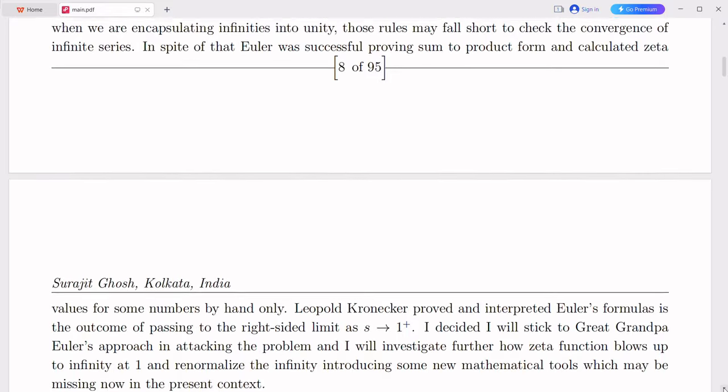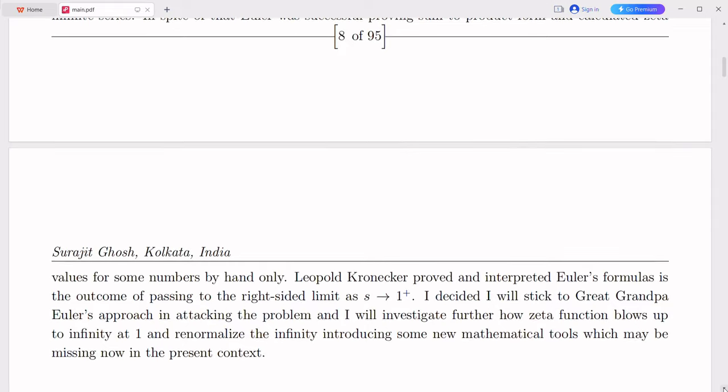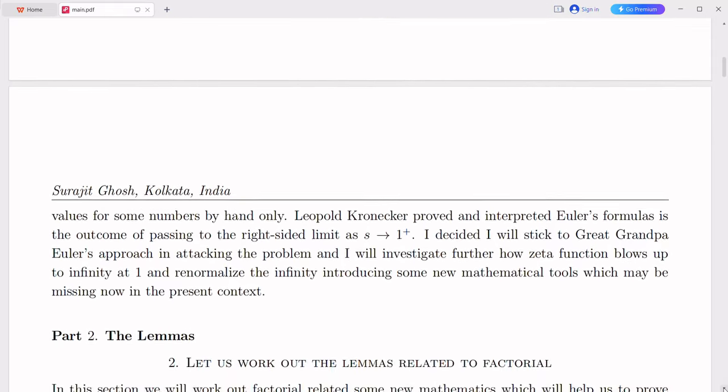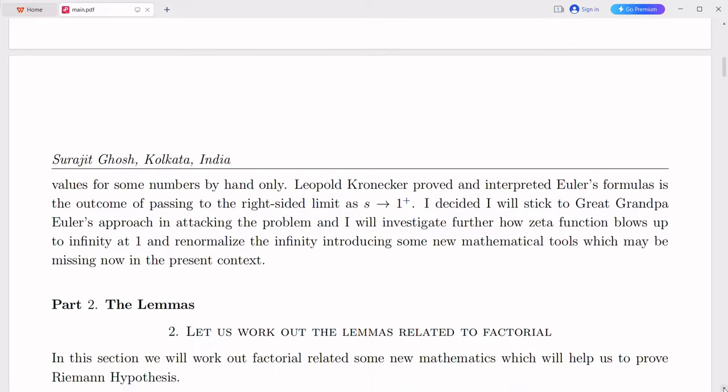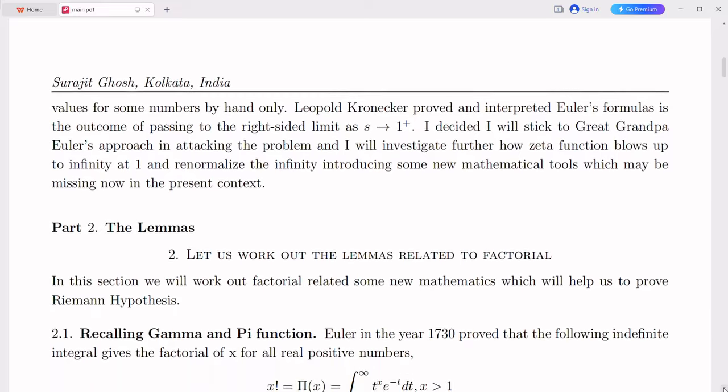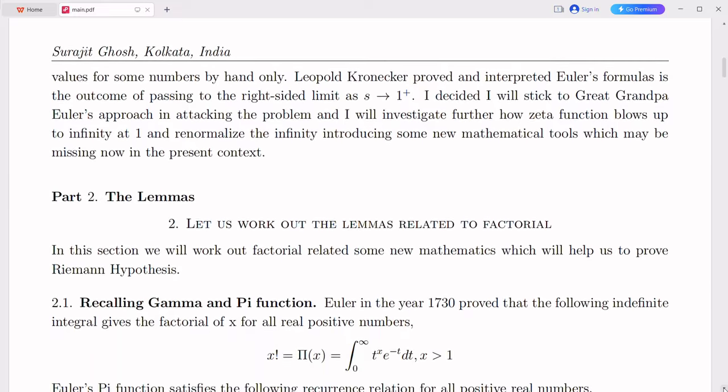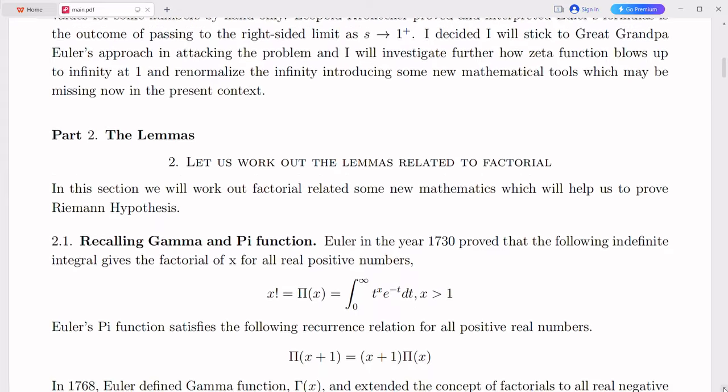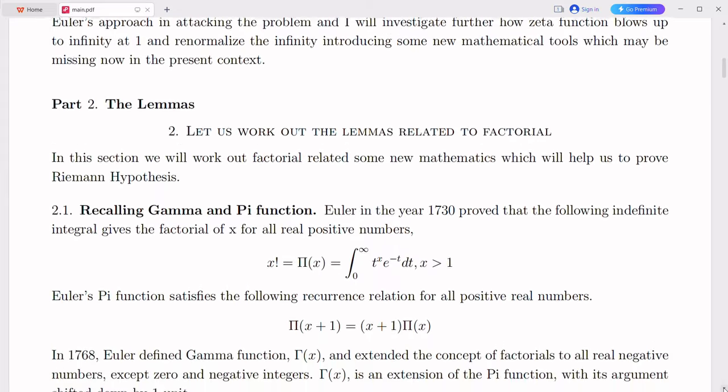I began by reading Wikipedia articles on physics, a subject that had always interested me despite my limited knowledge from school. It was during this exploration that I encountered a pie chart illustrating the composition of the universe: 69% dark energy, 26% dark matter, and 5% normal matter. This distribution didn't sit well with me. I had a sense that something fundamental must be missing. In 2015,